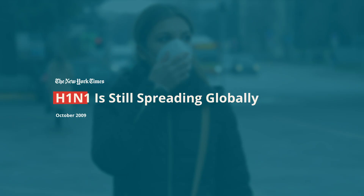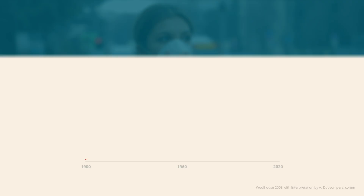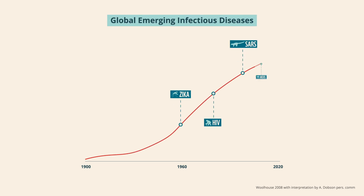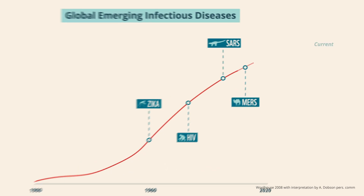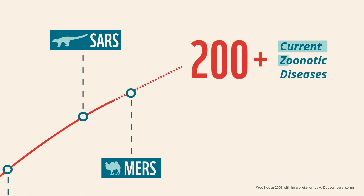While zoonotic diseases may seem new, they've been making headlines for the past 60 years. These animal-to-human spillovers are on the rise, and the diseases they cause disproportionately impact indigenous people and communities of color. There are currently more than 200 zoonotic diseases.